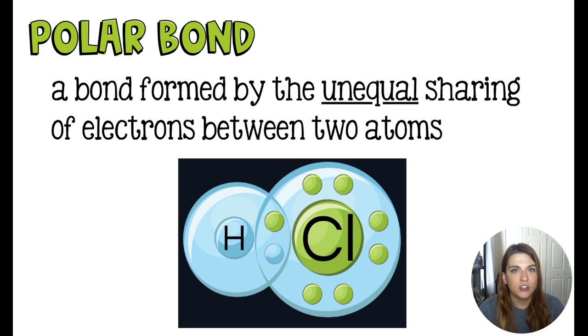When we have shared electrons that are not shared equally or fairly, we are going to call that a polar bond. Now, I know that sounds a little bit weird, and it's going to sound weirder in a second, but work with me here. Polar really means opposite. Think polar opposites. We have a north pole and a south pole. North and south are opposites. So in this case, we have hydrogen bonded to chlorine.